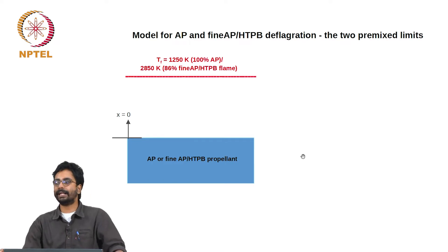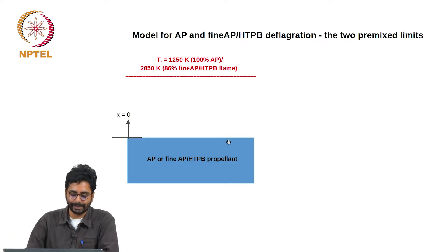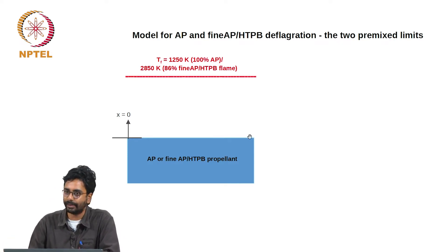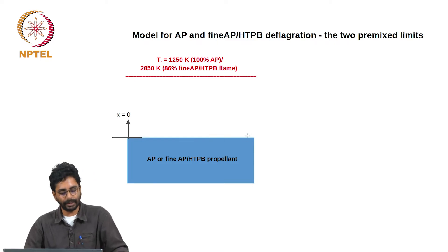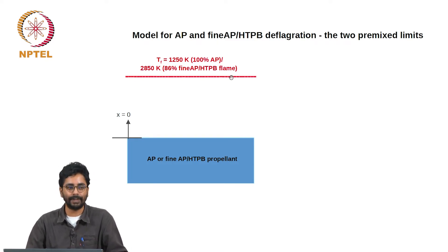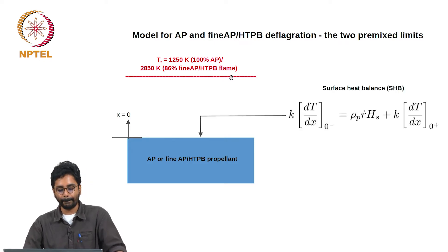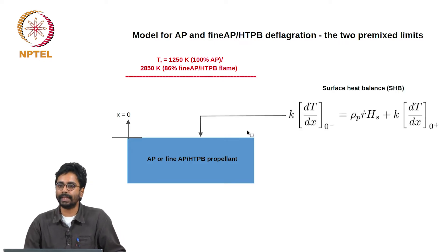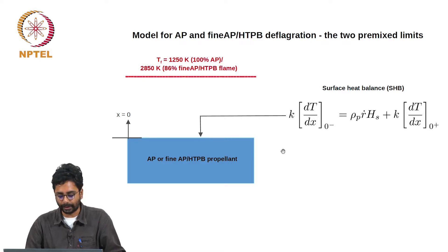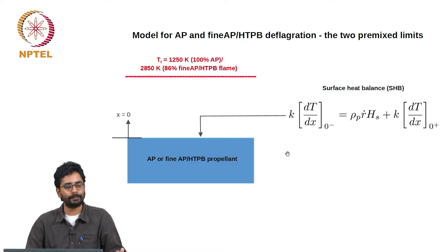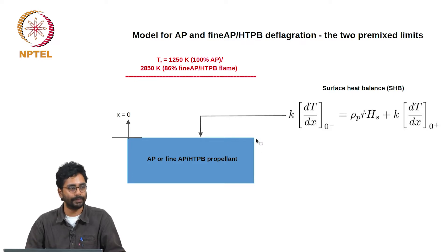The general process is that this flame transfers heat to the surface, causes decomposition, and the decomposition products burn and in turn sustain the flame. The basic equation that we need to construct to get an expression for burn rate is the heat flux balance at the surface of the propellant.